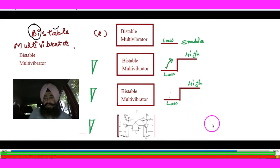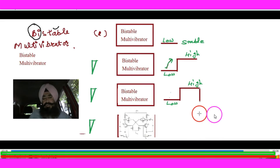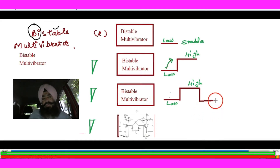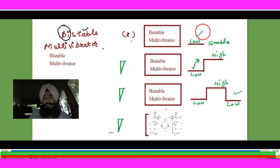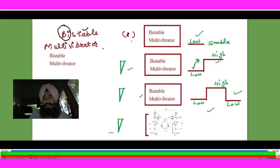Then again we apply the triggering pulse and it jumps from the high state back to the low state. So: low state is stable, apply triggering — go to high; apply triggering again — high to low.